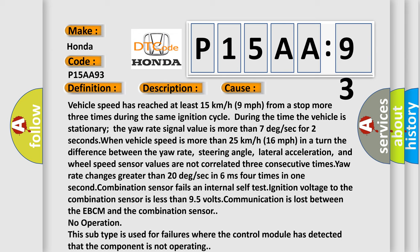In a turn, the difference between the yaw rate, steering angle, lateral acceleration, and wheel speed sensor values are not correlated three consecutive times. Yaw rate changes greater than 20 degrees per second in six milliseconds four times in one second.